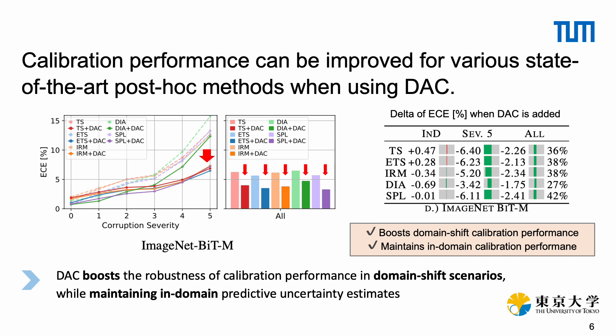On the left, we demonstrate how DAC improves calibration performance, especially when corruption severity of the test dataset is increased. In the table on the right, we take a closer look at the relative improvement of DAC versus state-of-the-art calibration methods. DAC boosts the robustness of calibration performance in domain shift scenarios, and especially in OOD scenarios, while at the same time maintaining in-domain calibration.